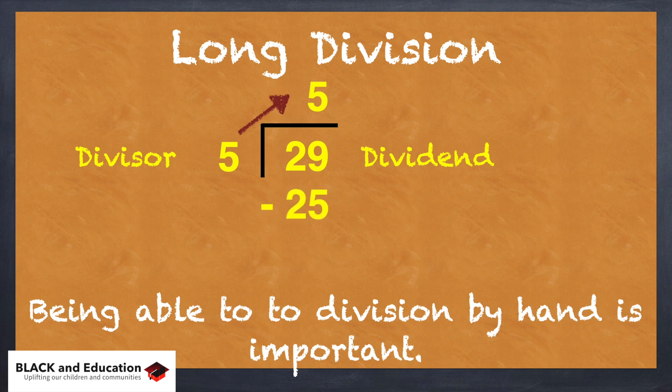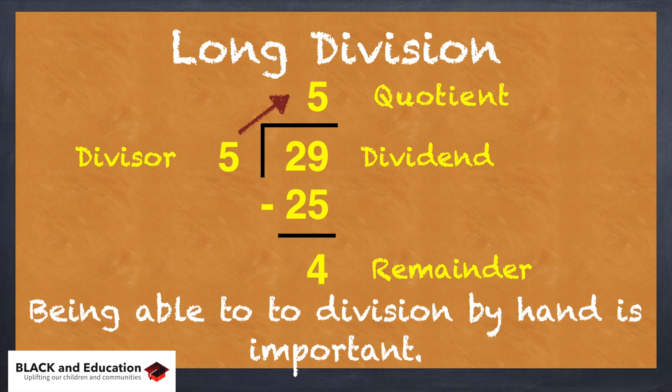So we take that 25, we're going to subtract that number. So we have 29 minus 25, and we do that, then we're going to get a remainder of 4. So 5 becomes our quotient, but our quotient is kind of like a partial quotient. We have 5 with a remainder of 4.